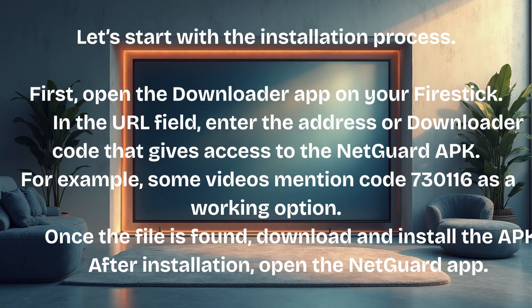Let's start with the installation process. First, open the Downloader app on your Fire Stick. In the URL field, enter the address or downloader code that gives access to the NetGuard APK. For example, some videos mention code 73016 as a working option. Once the file is found, download and install the APK. After installation, open the NetGuard app.